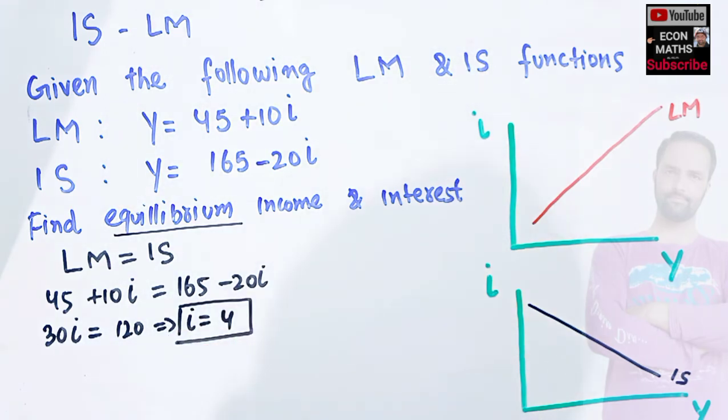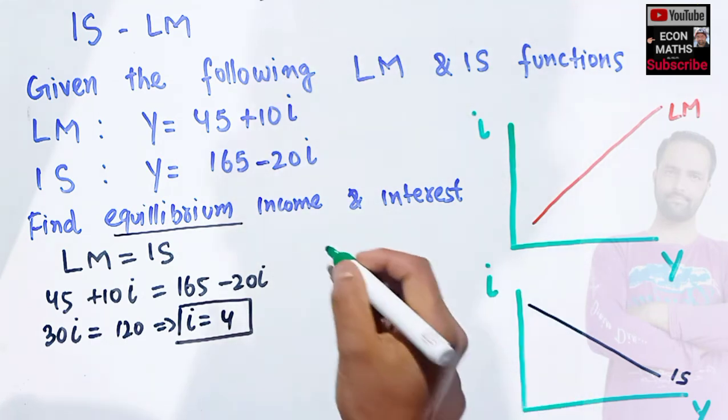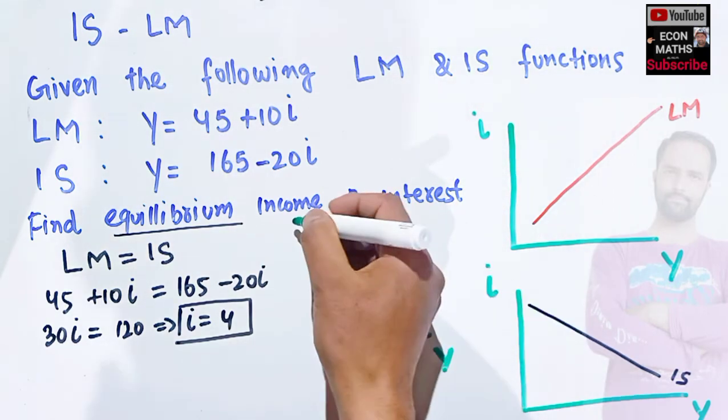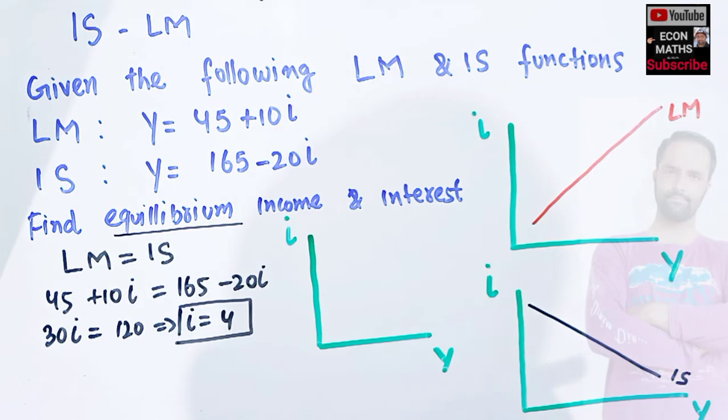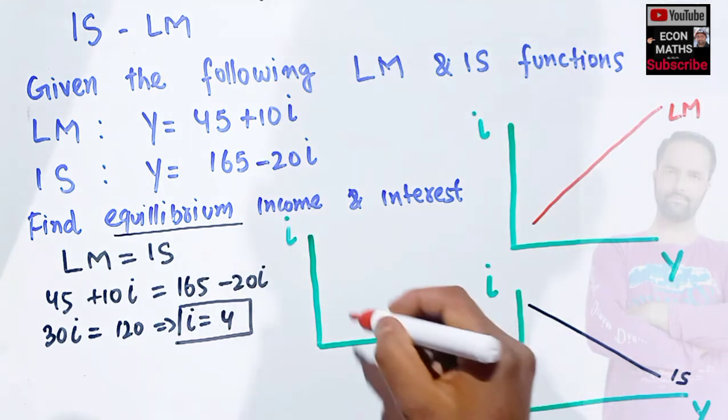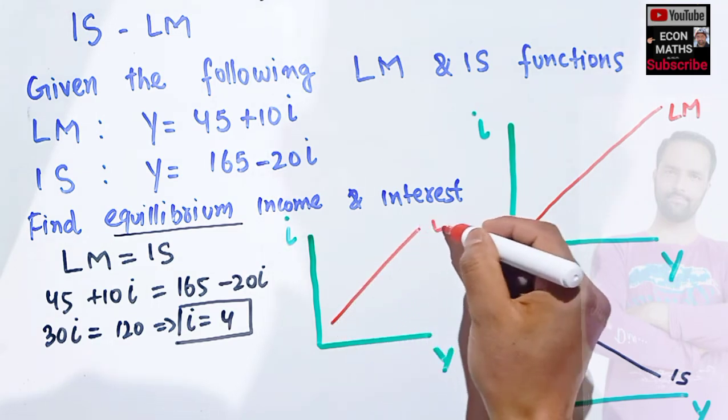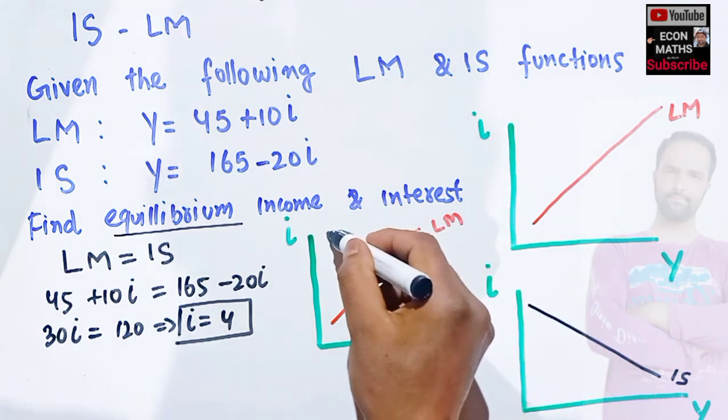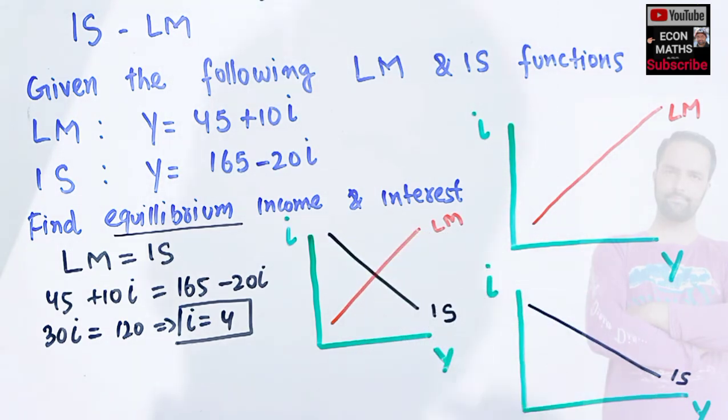This will be our equilibrium level of interest. Graphically, it means we need to combine these two graphs. We have Y here and level of interest on the vertical side. Our LM equation is this, and this is our IS equation. So at the interest level of 4%, our IS and LM equations are equal.